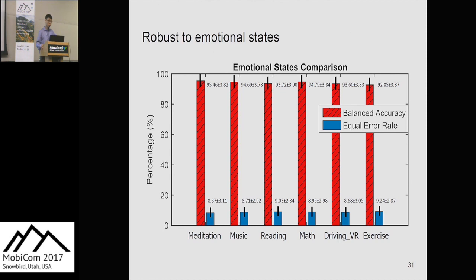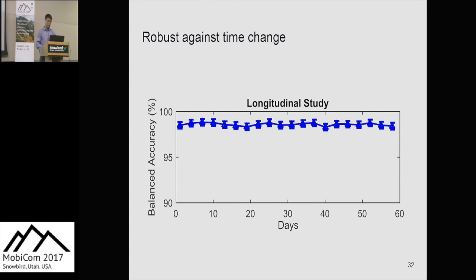We also evaluated robustness to emotional changes by examining subjects in different emotional states — including meditation, listening to music, reading, doing math calculations, playing a VR driving game, and immediately after intensive exercise. Performance remained stable in terms of balanced accuracy and equal error rate, because the system is independent of heart rate variation. A longitudinal study over six days also confirmed that CardiacScan is a robust biometric.